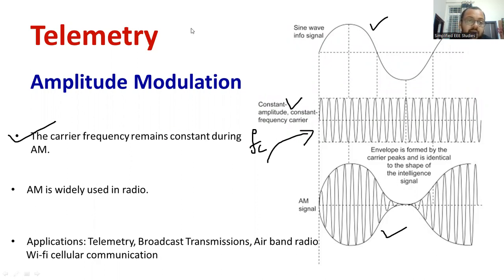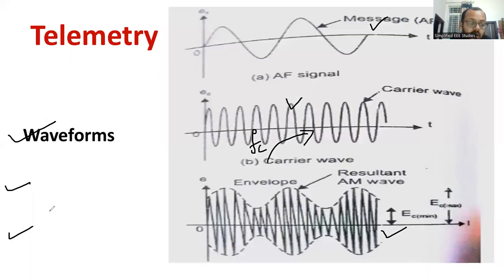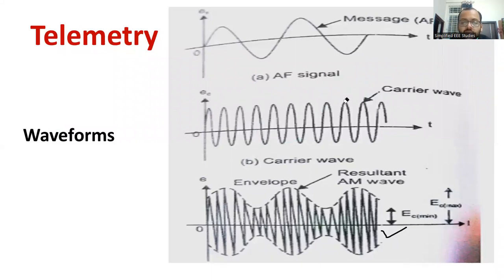Any waveform can be used; I have taken examples from various textbooks to show how the process takes place. You are changing the amplitude of the message signal with respect to the carrier, and you get this kind of envelope — an upper envelope as well as a lower envelope, as already shown in the previous slides.